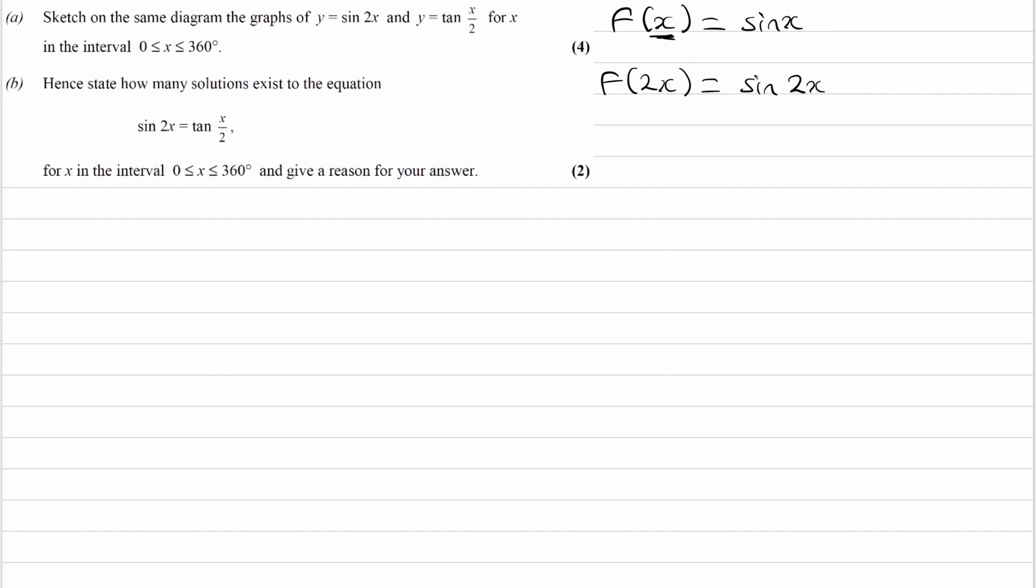So what does that actually do? What is this transformation? Whenever you have f of ax, that is a stretch of scale factor 1 over a parallel to the x-axis. So you're basically multiplying all the x coordinates by 1 over a and the graph will then squish horizontally.